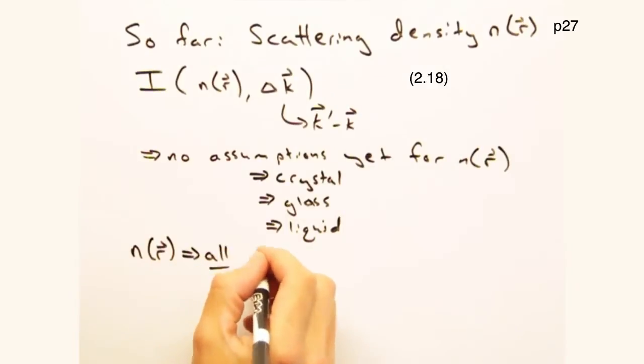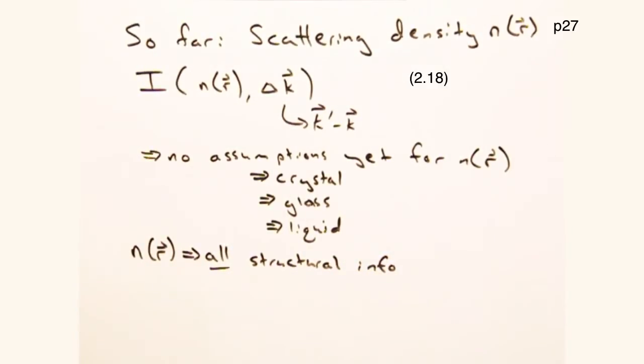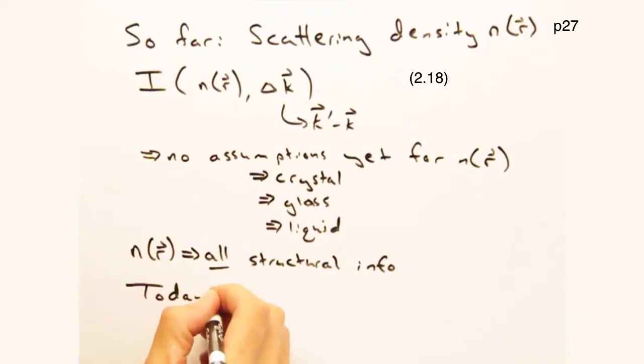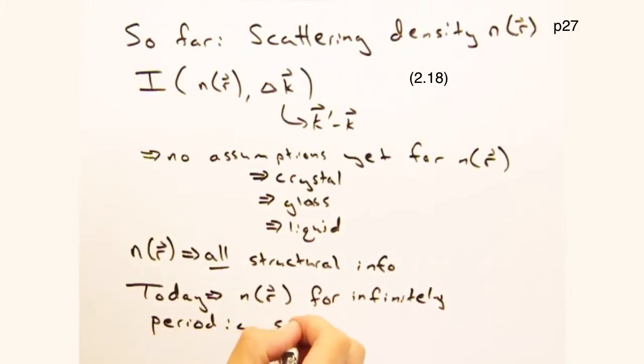But n of r is pretty important, since it contains all the structural info of the material we're studying. Indeed, and so to that end, our goal is to build up an expression for n of r for an infinitely periodic solid. From there, we'll use translational symmetry to place constraints on this expression, so by the end of the video, we should have a well-defined n of r.